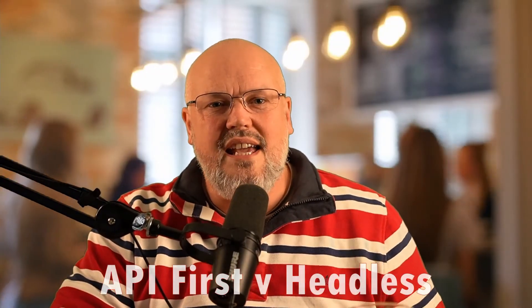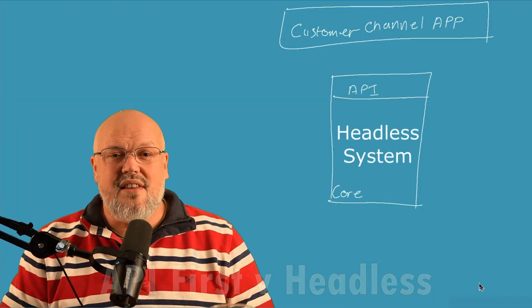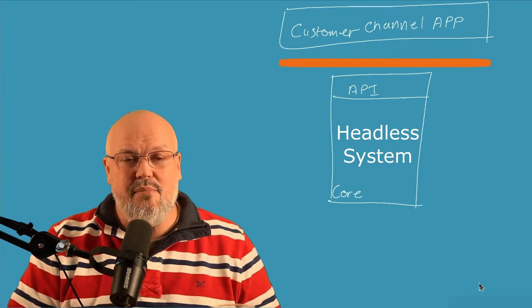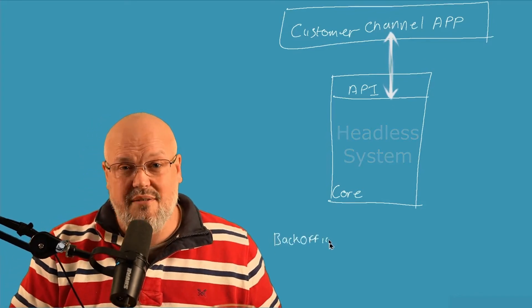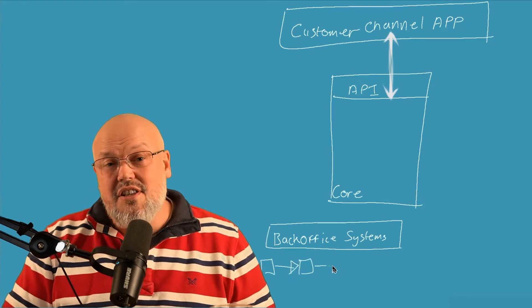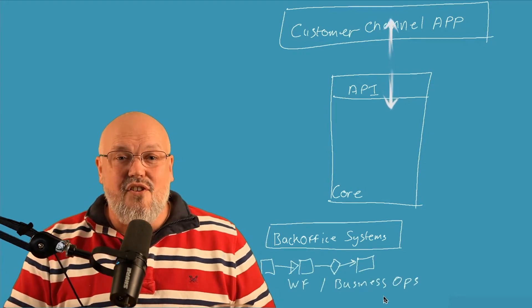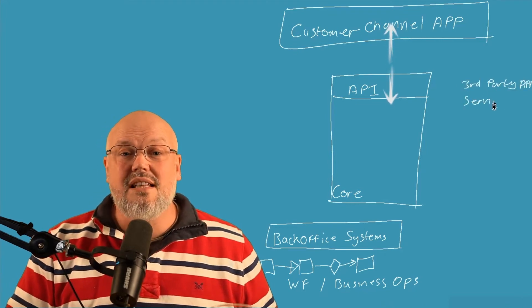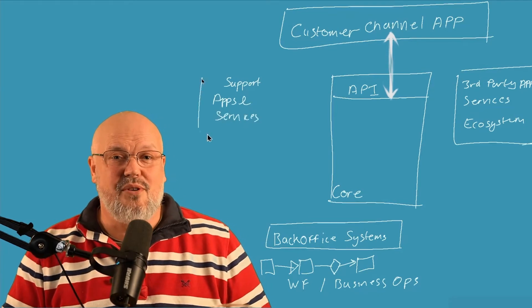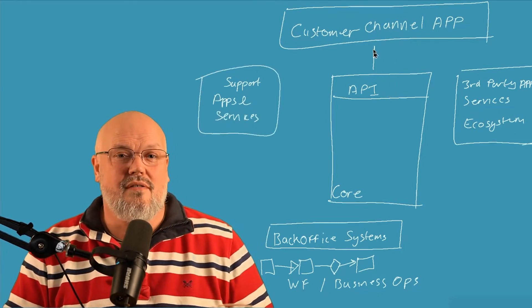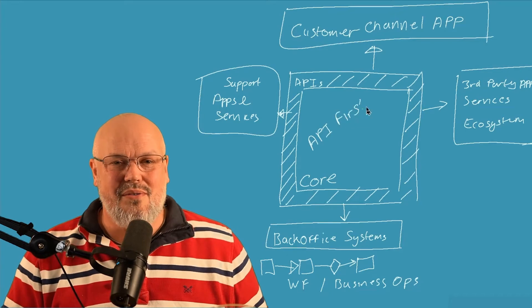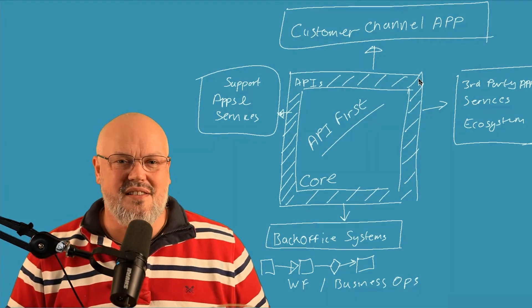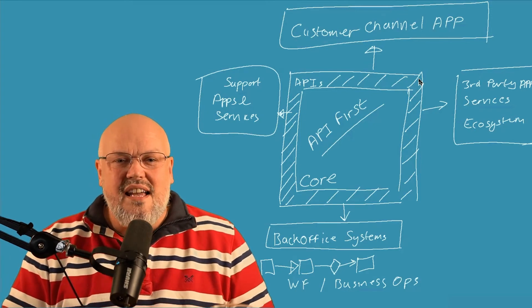What's the difference between API First and headless? Headless technology is about creating a system that is completely independent from the implementation of its presentation and user experience using sets of APIs. That sounds a lot like API First, but the real difference comes down to API coverage. Delivering the user experience is only a fraction of the functionality of a system. For instance, an e-commerce system is not just about delivering the experience, but also about delivering a brand's business model, business user workflows, and connecting to other systems in the ecosystem. That is why API coverage is so important — without great APIs, it's impossible to integrate these systems together. So it's entirely possible to have a headless system that is still not API First.